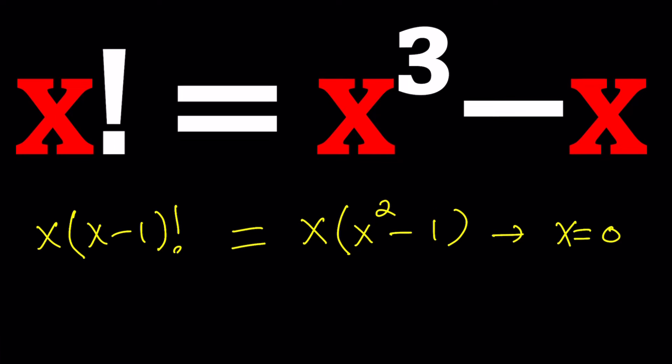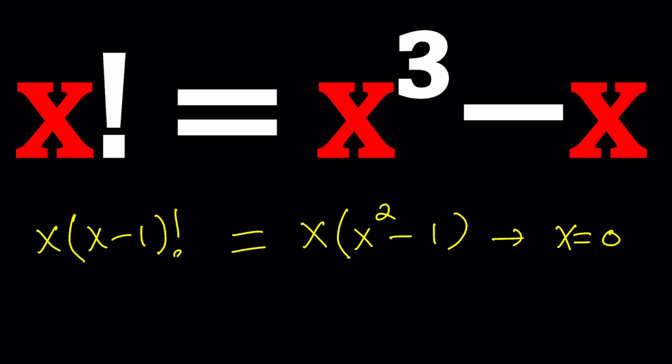this is only defined for non-negative integers. So the smallest value of x is 0. And when x is 0, you get something like negative 1 factorial,